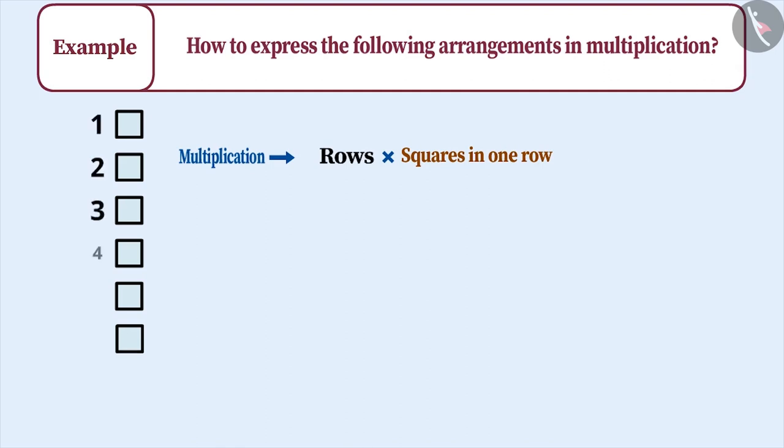Here, the number of rows are 6 and each row has 1 square. So, we will express this in multiplication as 6 multiplied by 1.